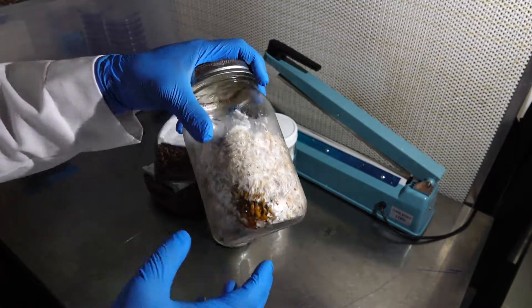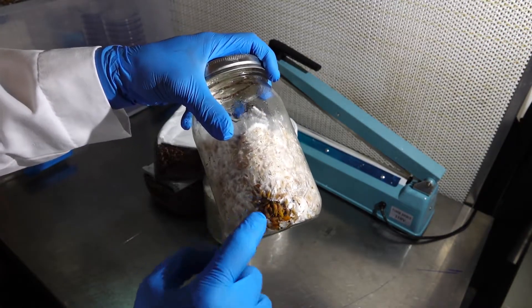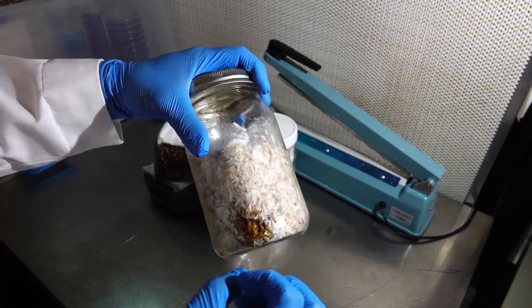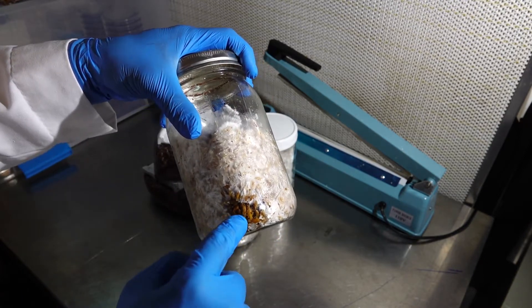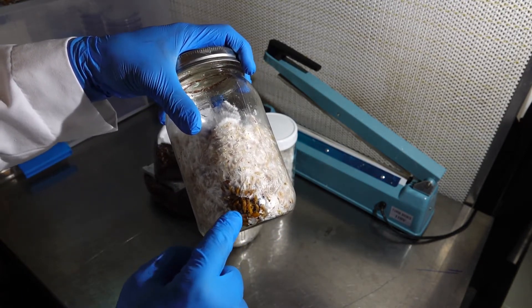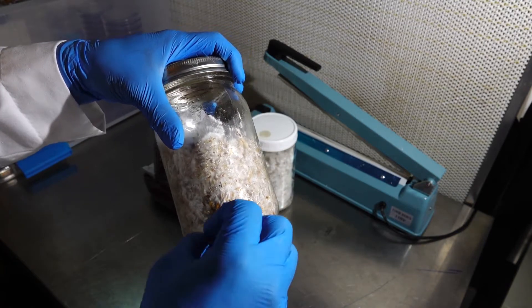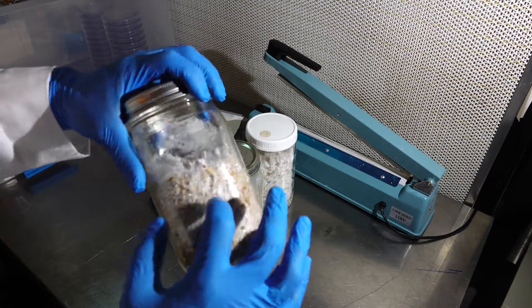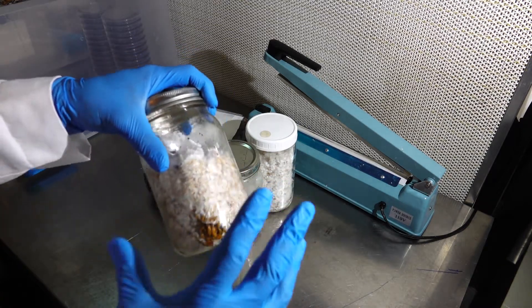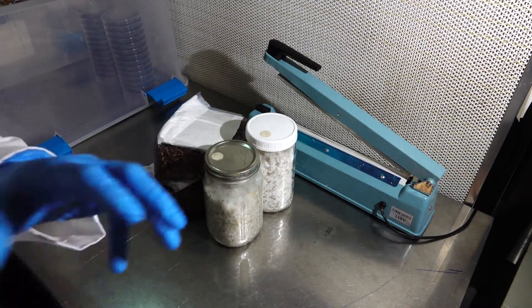Imagine it just expanding and exploding out of control. So if there was some kind of bacteria just hanging out in that little corner, that bacteria will transfer and eat away at your grain, inhibiting the mycelium's growth and overtaking your grain. So you do not want to do that.